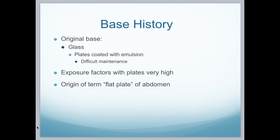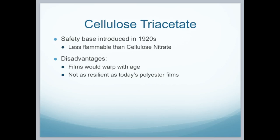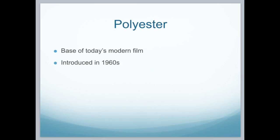There were also high exposure factors related to using this type of medium. If you ever hear the term flat plate, it usually refers to an abdomen, and that goes all the way back to this original glass flat plate. Because of a glass shortage during World War I, they quickly switched to cellulose nitrate. The problem with cellulose nitrate is it's highly flammable, and they had some devastating fires in the 20s and 30s. So they went over to cellulose triacetate, considered a safety base because it was less flammable. This all came down in the 1920s. The disadvantage was that the films would warp pretty easily. So they switched to polyester — the base of today's modern film, that light blue film, introduced in the 60s.